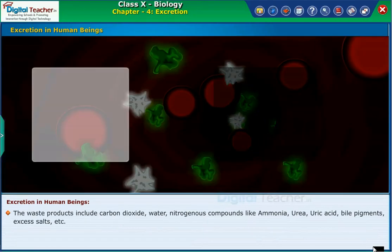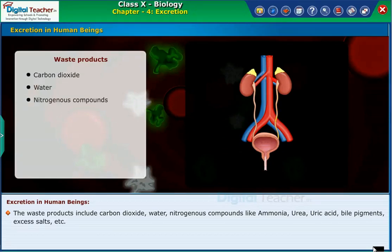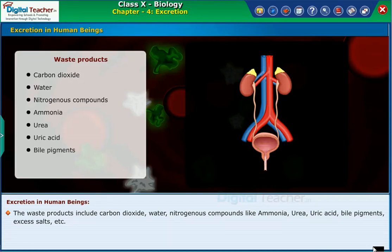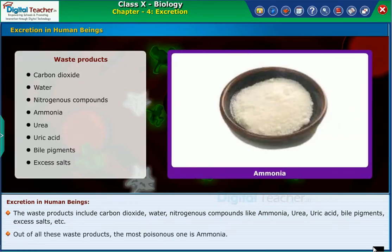The waste products include carbon dioxide, water, nitrogenous compounds like ammonia, urea, uric acid, bile pigments, excess salts, etc. Out of all these waste products, the most poisonous one is ammonia.